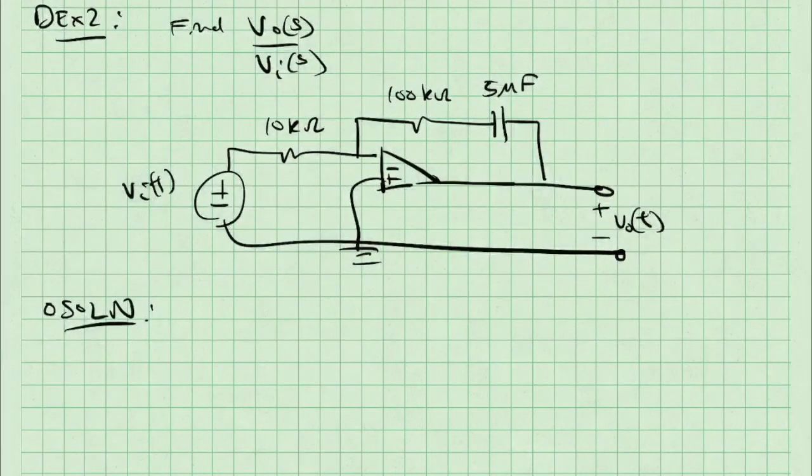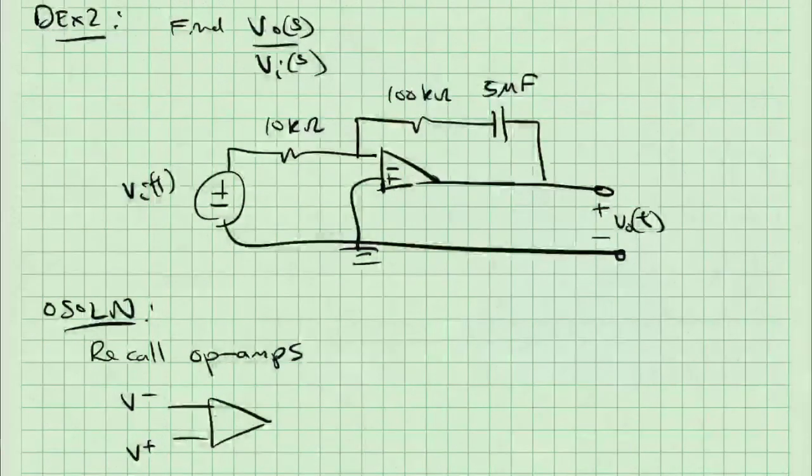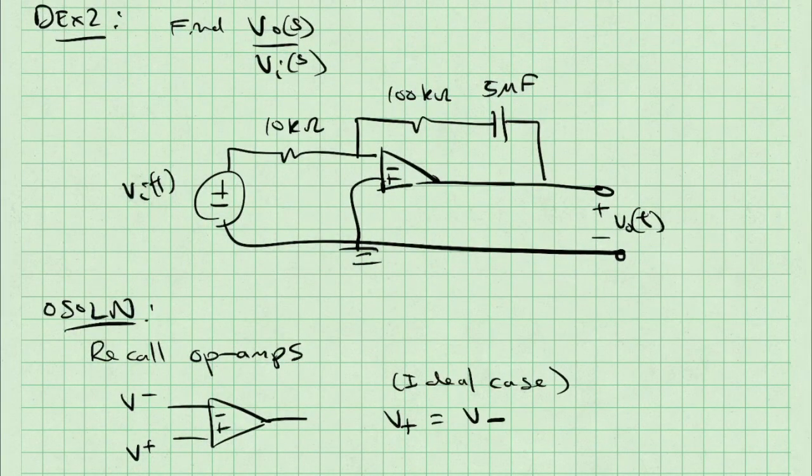I'll remind you that in an ideal op amp, I've got two input terminals, V minus and V plus, and an output terminal. And in this ideal case, V plus equals V minus. The terminal voltages are the same. There is zero differential input voltage. In addition, the input current is equal to zero. So there is no current that goes into the plus or the minus input terminal.